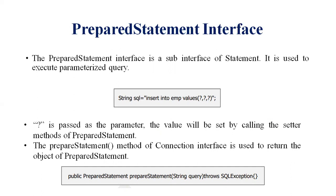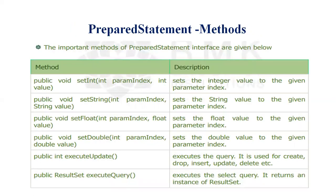The prepareStatement method of the Connection interface is used to return the object of PreparedStatement: public PreparedStatement prepareStatement(String query) throws SQLException. The setter methods include: public void setInt(int paramIndex, int value) for integer values; public void setString(int paramIndex, String value) for string values; public void setFloat(int paramIndex, float value) for float values; and public void setDouble(int paramIndex, double value) for double values. There is also public int executeUpdate() and public ResultSet executeQuery().